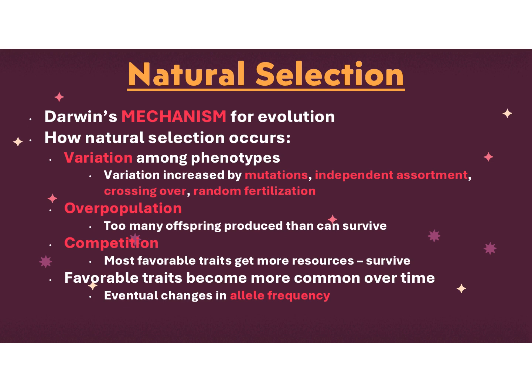You must have favorable traits becoming more common over time, which is going to change the allele frequency. And again, evolution through natural selection takes a long, long time — 50 generations at least.